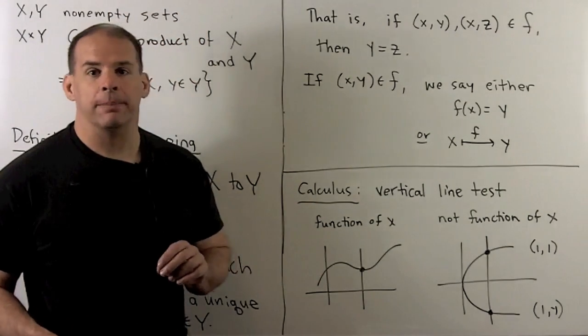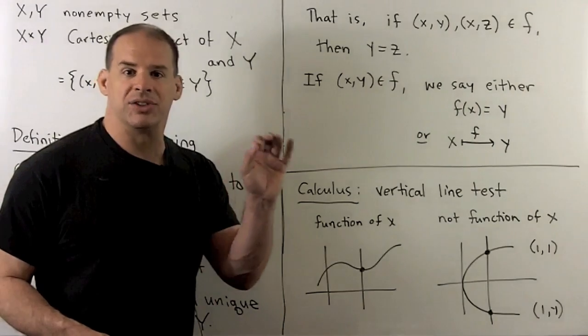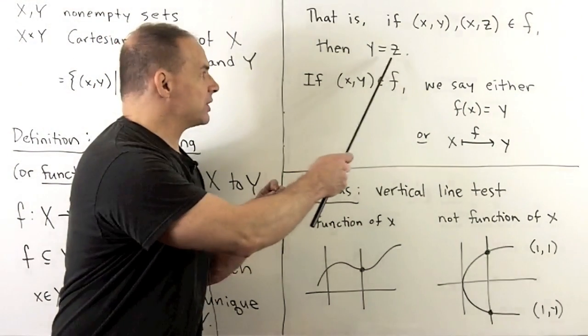The way we say this mathematically, if we have x comma y and x comma z as elements of f, then we must have that y is equal to z.